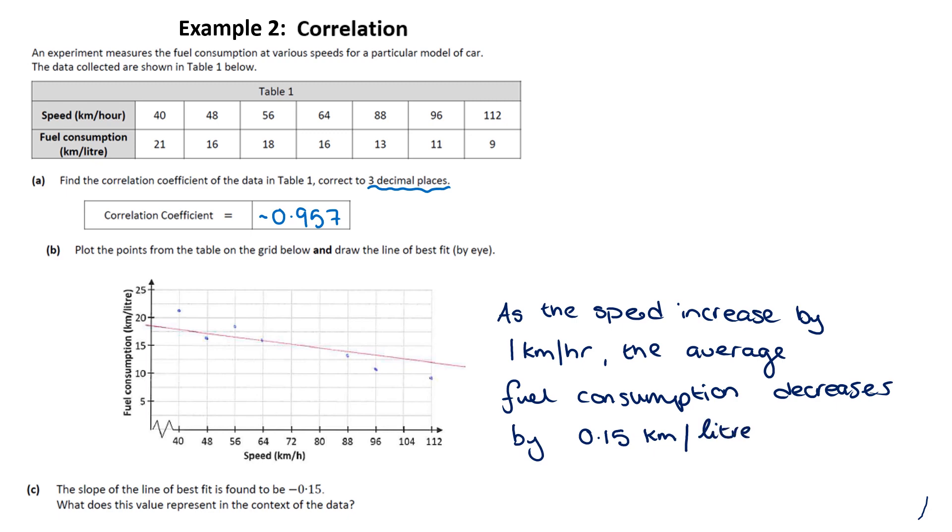And the key things they're looking for here: speed increase by one kilometer per hour, the fuel consumption decreases 0.15 kilometers per liter. So they're the key things that they're looking for. So that decreases is coming from the fact it's negative. The 0.15 means kilometers per liter. And it is for one movement on the x axis. So it gives us the movement in the y axis for each step on the x axis.